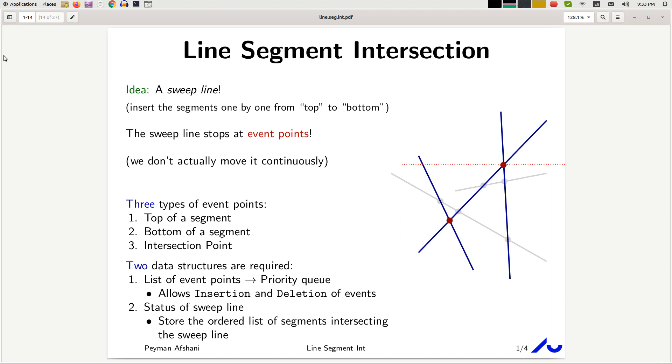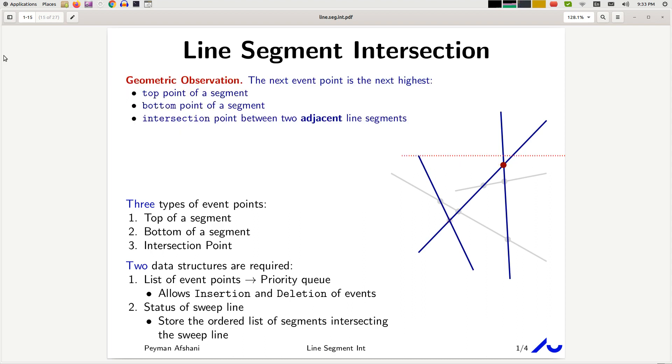On top of the two data structures that I mentioned, the sweep line algorithm that we're looking at also uses a very interesting and crucial geometric observation, and that's the following: that the next event point is the next highest event point among these three types of event points.